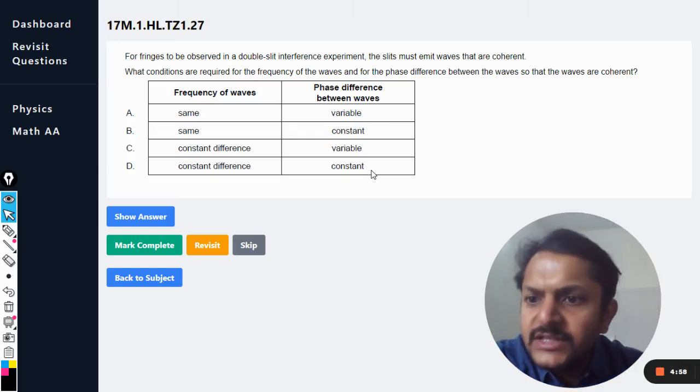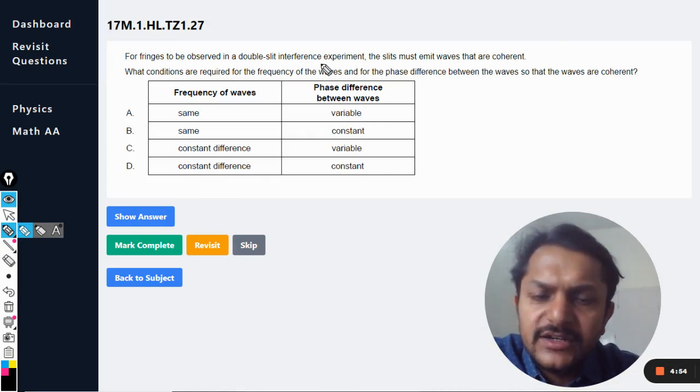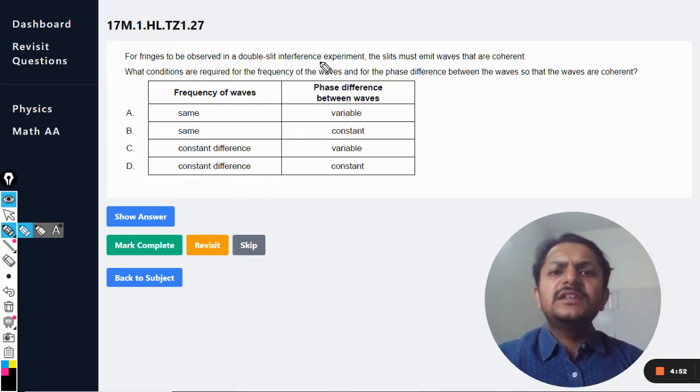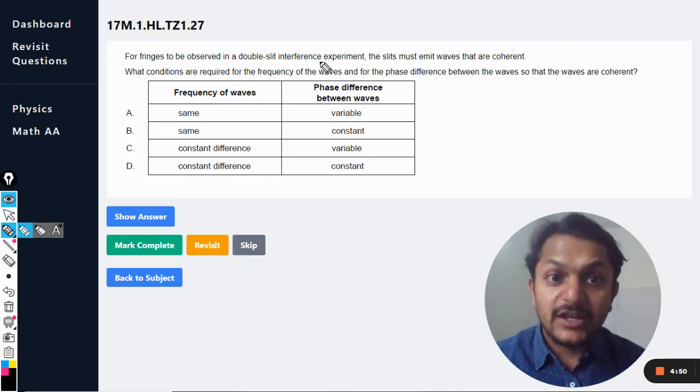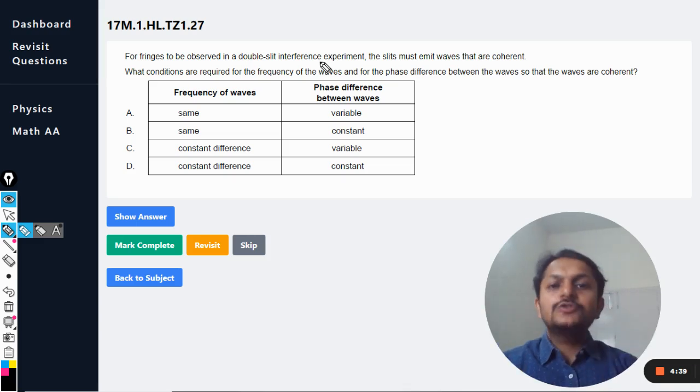Okay dear students, let's see what is in this question. For fringes to be observed in a double-slit interference experiment, the slits must emit waves that are coherent. What conditions are required for the frequency of the waves and for the phase difference between the waves so that the waves are coherent?